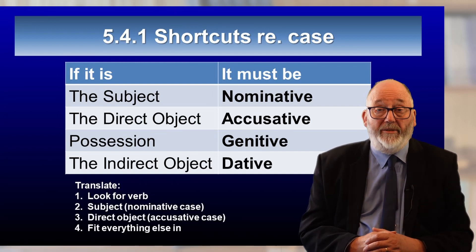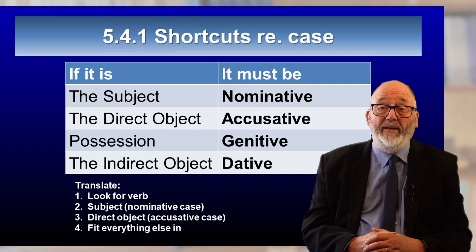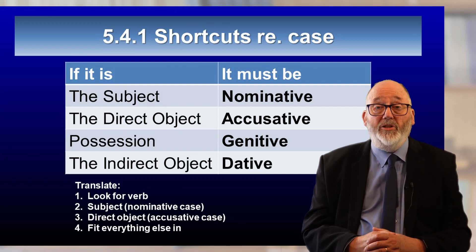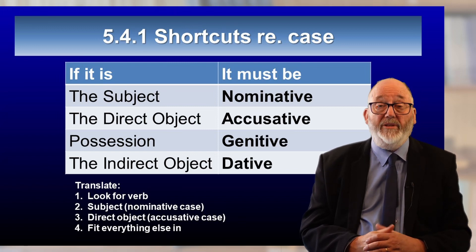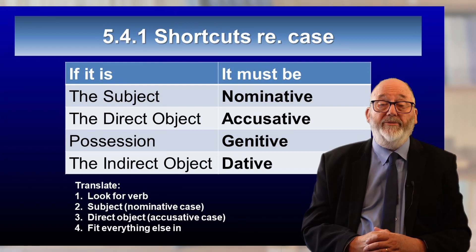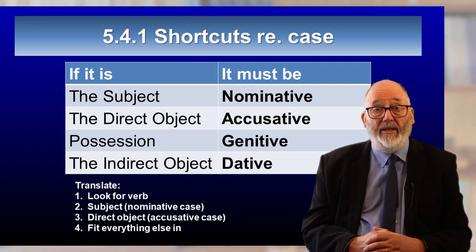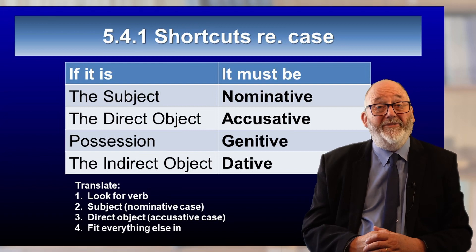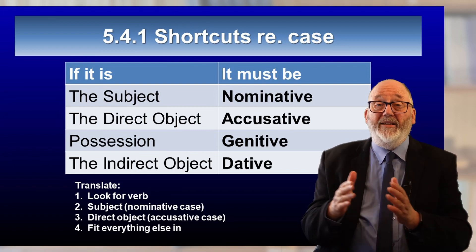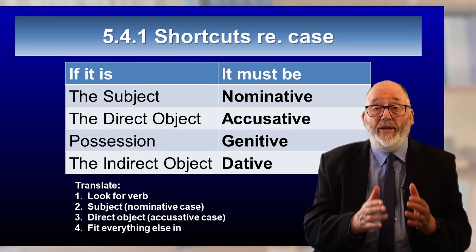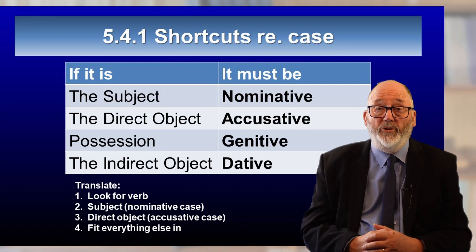Now that we've met genitives, we need to expand our rules of translation just a little bit. The first three steps are exactly the same: first, find the verb; second, find the subject of the verb, which is in the nominative case; third, find the direct object of the verb, which will be in the accusative case. And finally, we fit everything else around those, including prepositional phrases formed from the prepositions ek and apo.